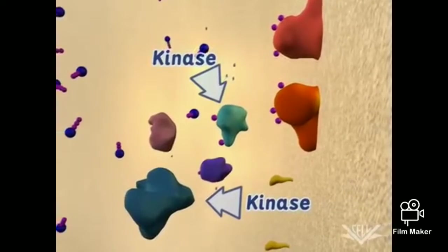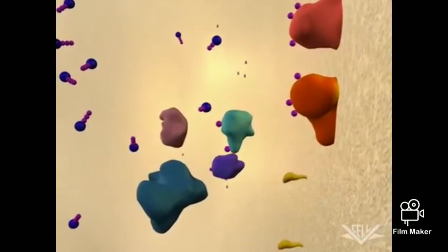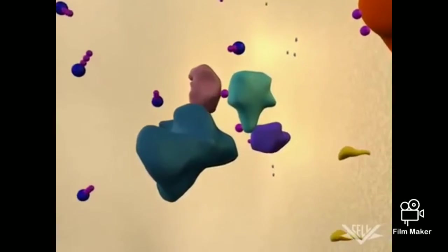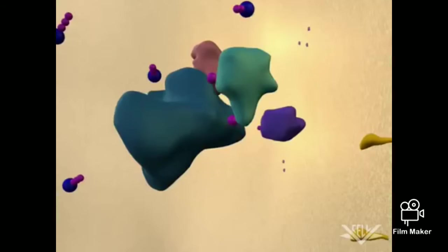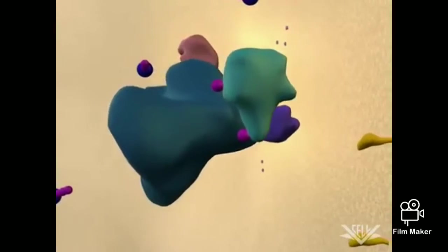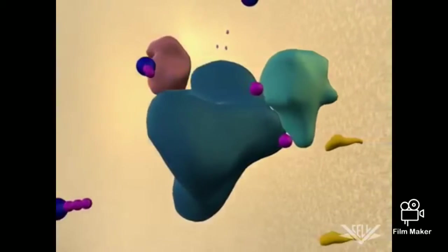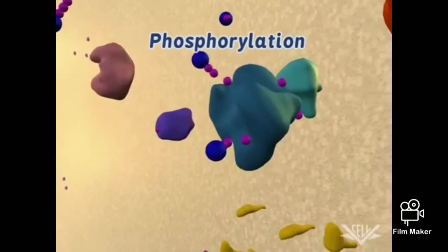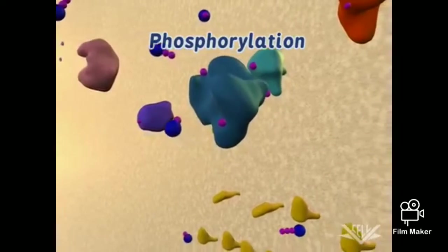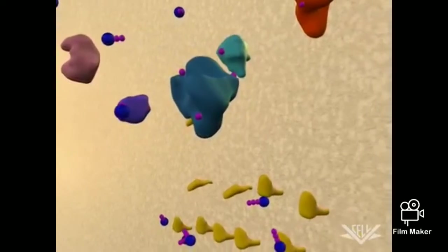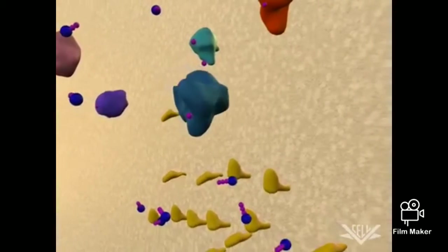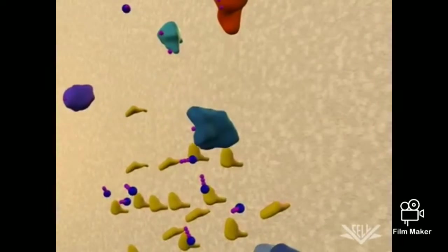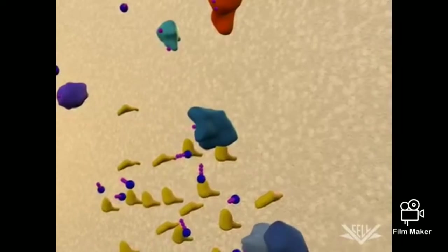Proteins that add phosphate groups to another protein are called kinases. Kinases are often components of signal pathways, and phosphorylation is an important form of component in the transmission of a signal from one compartment to another. In this system, the signal corresponds to the level of blood glucose and is transmitted from outside to inside the cell.